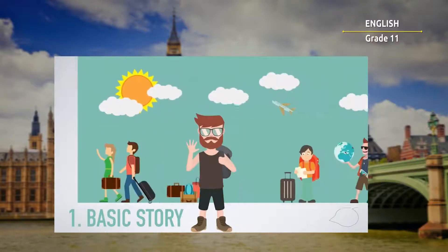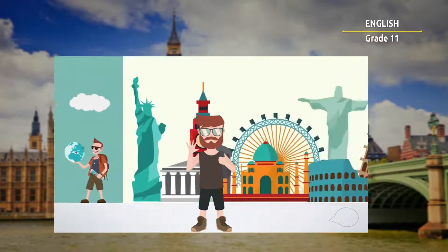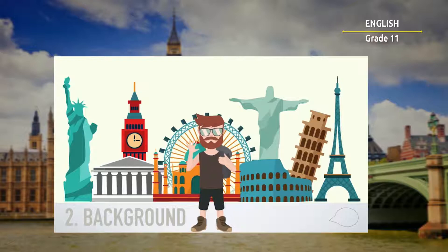For our example, the basic story is about a young man who traveled around the world with his friends. The second step to telling a story in English is to decide the background. In other words, figure out where the story will take place. For our example, the background is Paris.